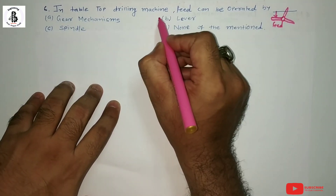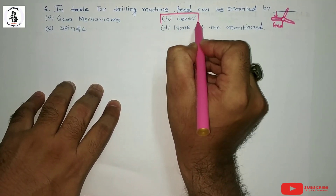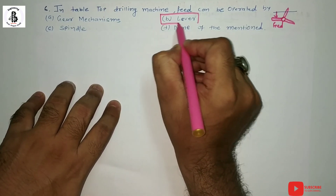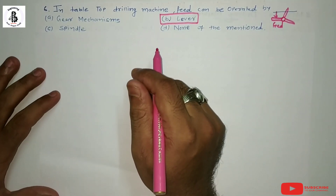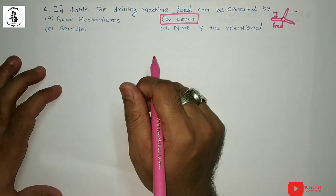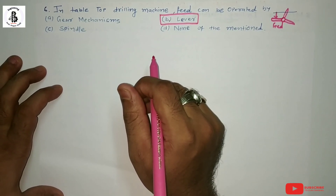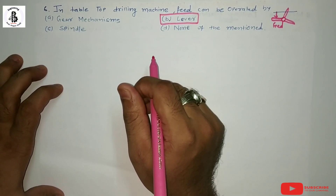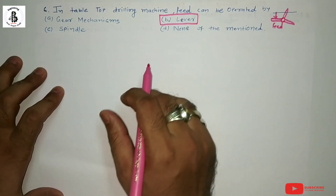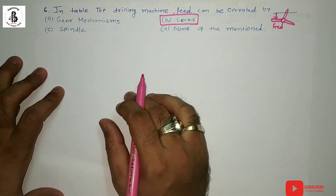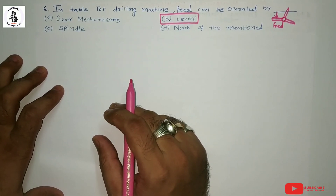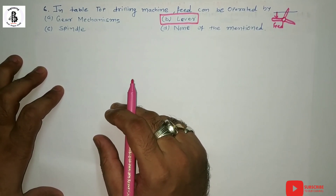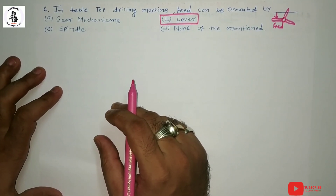If you want to learn in detail about the construction of drilling machines, you will find links in my description for different kinds of machines — such as sensitive drilling machines, radial drilling machines, upright drilling machines, gang drilling machines — and also the many kinds of drilling operations performed on drill machines.